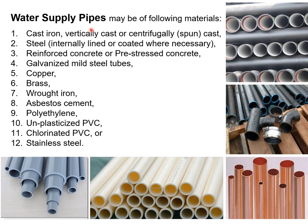Water supply pipes may be of the following materials: cast iron — vertically cast, centrifugally cast or spun cast — steel, reinforced concrete or pre-stressed concrete, galvanized mild steel tubes, copper, brass, raw iron, asbestos cement pipes, polythene pipes, unplasticized PVC (UPVC), chlorinated PVC (CPVC), or stainless steel.